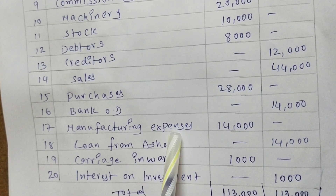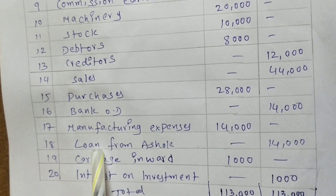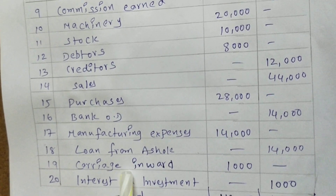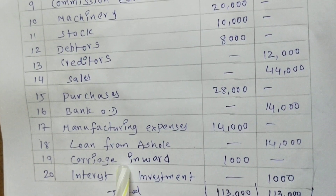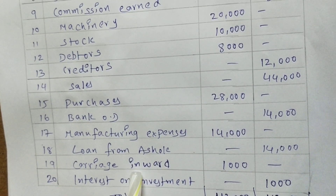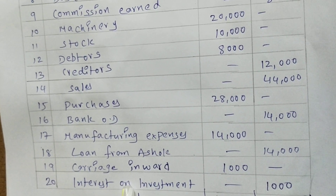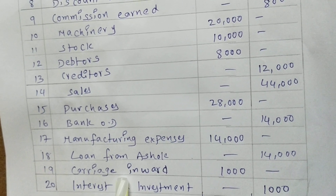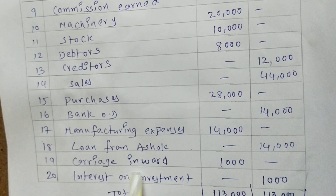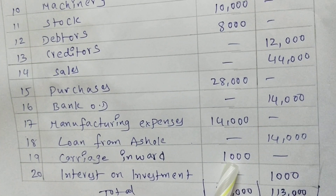Manufacturing expenses — all expenses go on the debit side. Loan from bank — a loan is a liability, all liabilities go on the credit side. Carriage inwards is also a transportation cost. The company receives materials from suppliers to manufacture goods, and for this the company has to bear certain transportation costs — these are called carriage inwards. Being an expenditure, carriage inwards goes on the debit side.